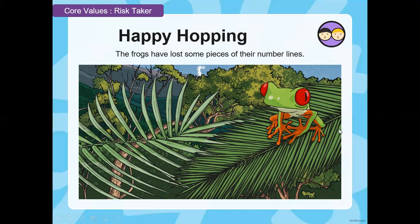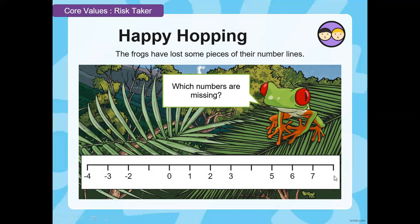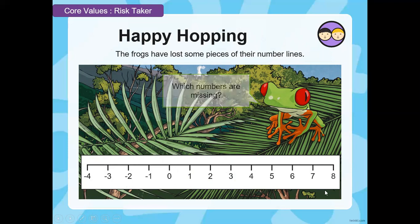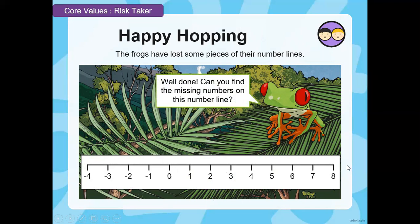Let's do some hopping with these frogs. The frogs have lost some pieces of their number lines, so let's see which numbers are missing. Starting from zero: one, two, three — four is missing — then five, six, seven — eight is missing. I solved the positive side easily, but what about the negative side? What comes right next to zero towards the left? The negative numbers start from what number? Looks like minus one is missing. Now pause the video and try to fill the missing numbers on the number line, including both positive and negative integers.